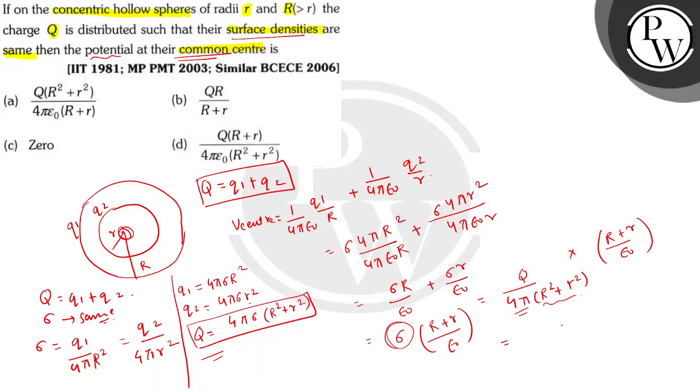Therefore, Q into R plus r upon 4π epsilon 0 times capital R square plus r square. So this is the final answer for V at center.